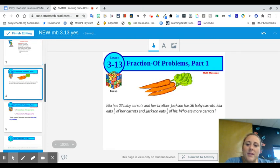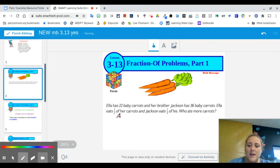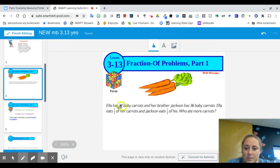Let's start off with our math message, really getting into the fraction of. We can see that Ella has 22 baby carrots, and I want to get in the habit of continuing to do cubes. So, we're going to circle 22 baby carrots, and her brother Jackson has 36 baby carrots. Ella eats half of her carrots, and Jackson eats one-third of his. Who ate more carrots?